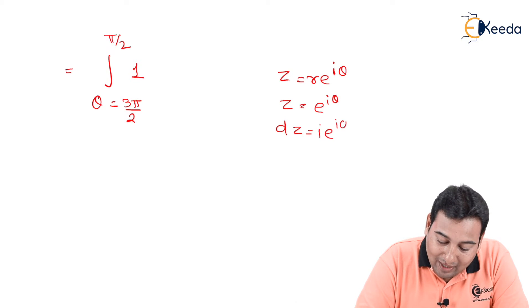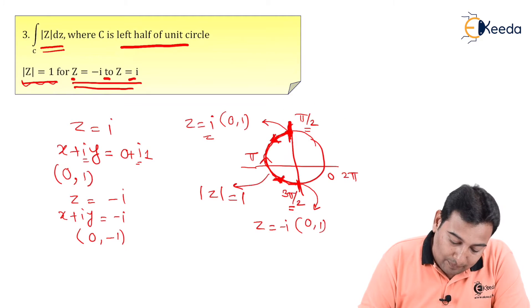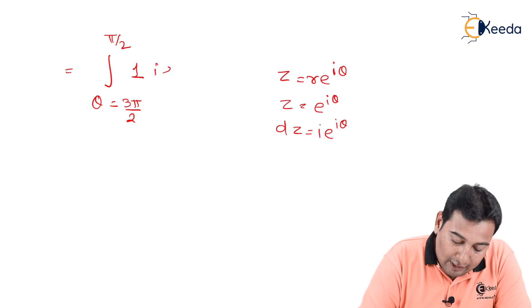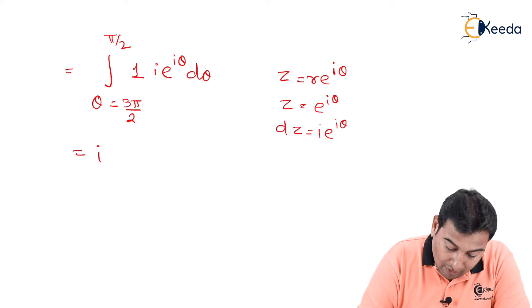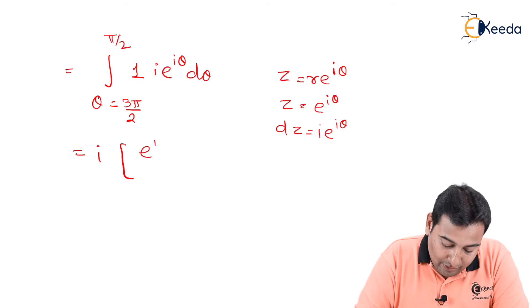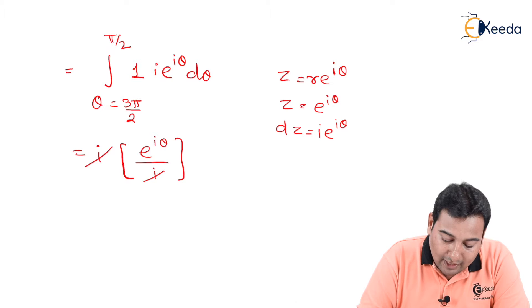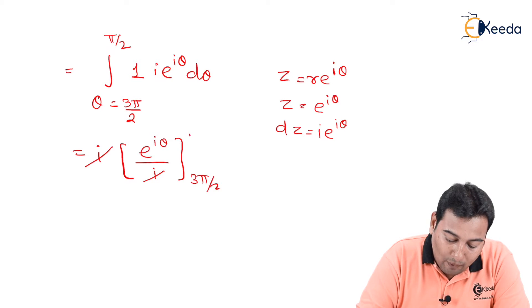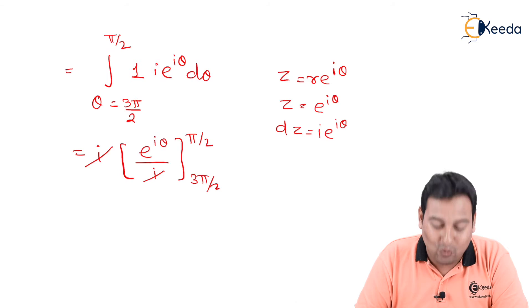Substituting, we get the integral of i·e^(iθ) dθ. The i is constant and comes out, and the integral of e^(iθ) is e^(iθ)/i. The i's cancel, leaving e^(iθ) evaluated from 3π/2 to π/2. We then put in the upper limit minus the lower limit.